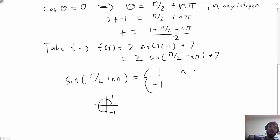We can see that depending on which situation I'm in, f(t) would either be 9 or 5, depending on whether n was even or n was odd.